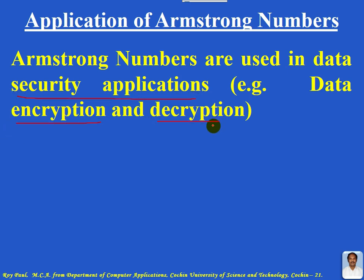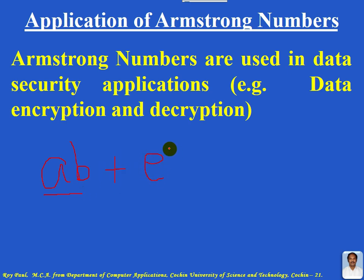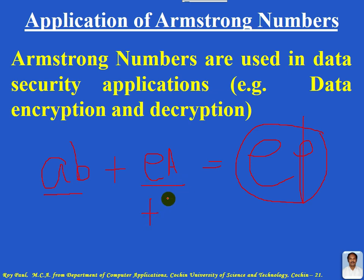What is encryption and decryption? Consider the password AB. The actual password will not be saved in a file because if someone opens that file, they will come to know the actual password. So what the programmer does is the actual password is passed through an encryption algorithm, and thereby an encrypted password is created. This encrypted password is saved in the file. For example, suppose the encryption algorithm used is increment by 1. So A incremented by 1 gives B, and B incremented by 1 gives C. So for the actual password AB, the encrypted password is BC.